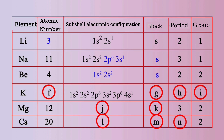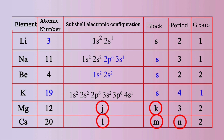What is the atomic number of Potassium? We can see that the total number of electrons in its subshells is 19. Hence, the atomic number of Potassium is 19. From the subshell electronic configuration of Potassium, its block, period, and group can be found out. Potassium belongs to s block, period 4, and group 1.